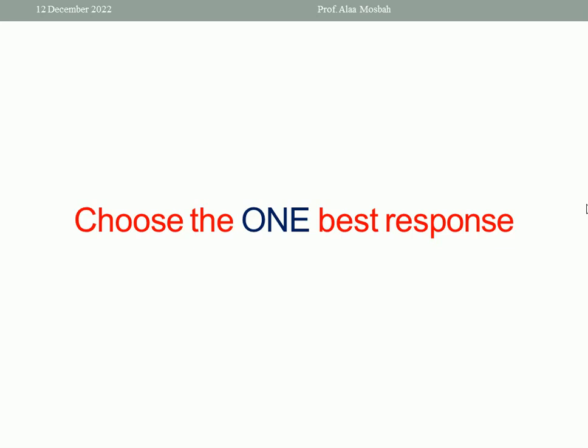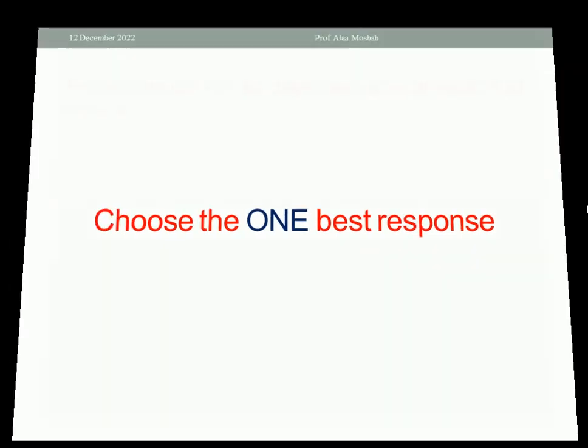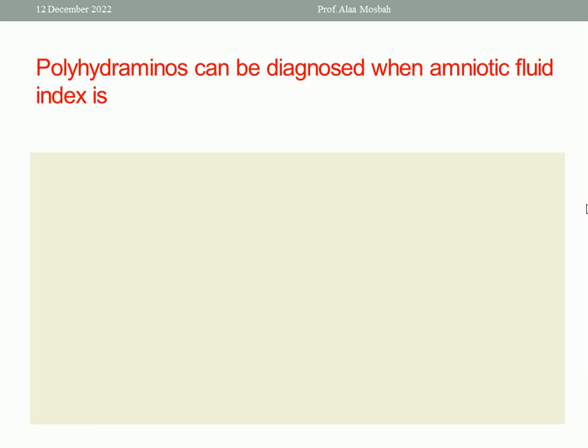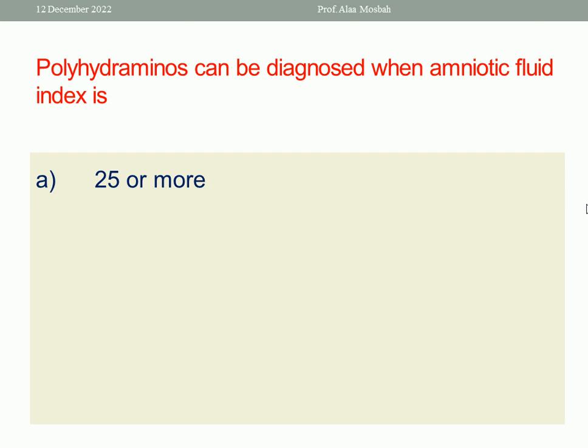Choose the one best response. The first question: Polyhydramnios can be diagnosed when the amniotic fluid index is — A: 25 or more.